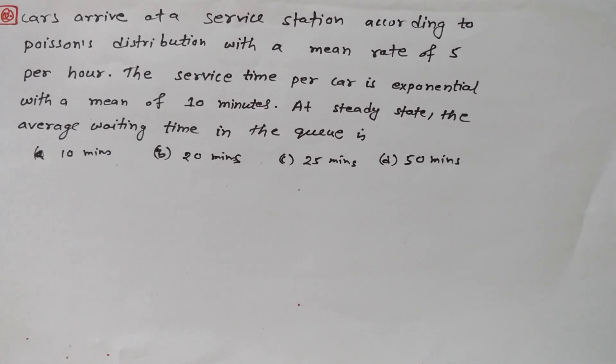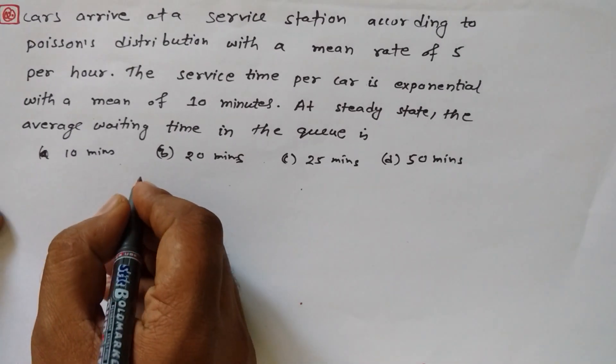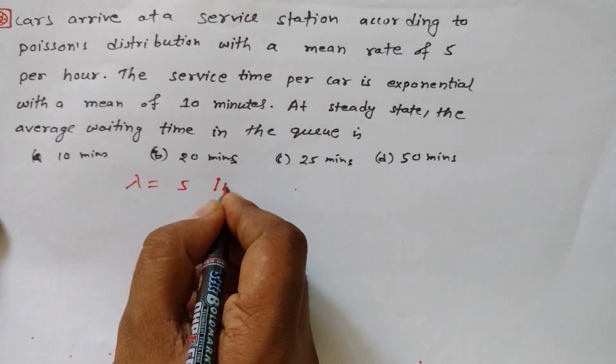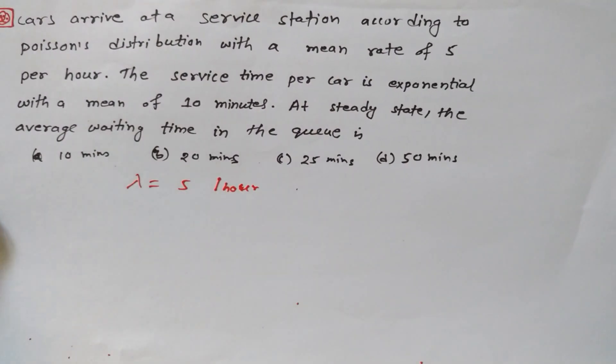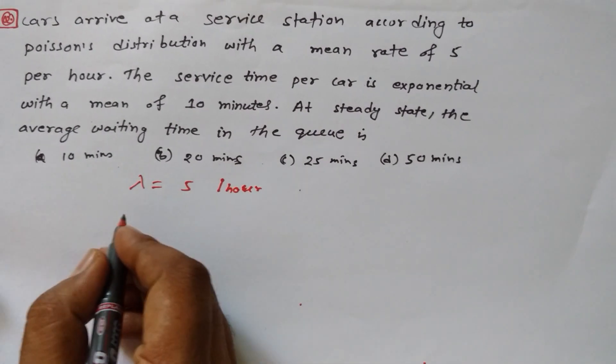In this question, cars arrive at a service station according to Poisson distribution with a mean rate of 5 per hour. That means the arrival rate, lambda, is equal to 5 per hour. Lambda is denoted as arrival rate.